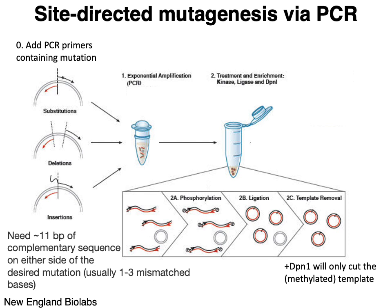The principle of site-directed mutagenesis is that a primer really only needs about 11 base pairs of complementary sequence in order to find its target and anneal. So if you want to introduce a mutation, you can introduce it into the primer by designing a primer where about 11 base pairs or more of sequence is complementary on either side of the mutation you're trying to produce. Your primer will then anneal and introduce the mutation into one of the copies made from that plasmid.